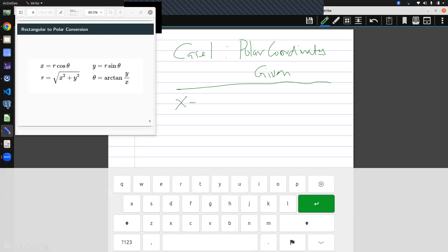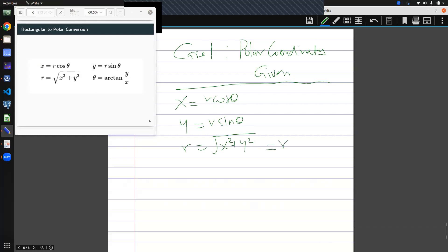It says my x is always r cos theta, my y is always r sin theta, and here r is the square root of x square plus y square. This simply means that r square is what? x square plus y square.